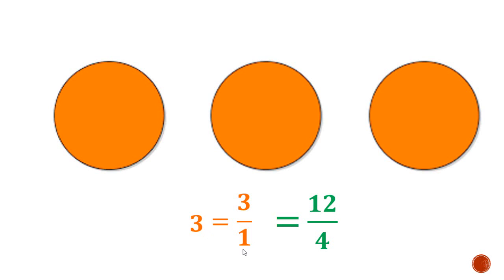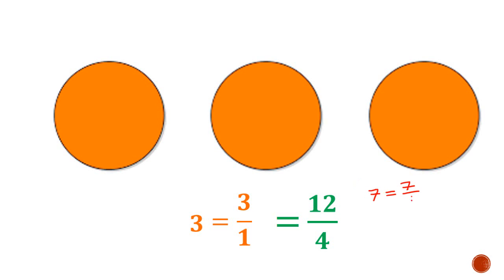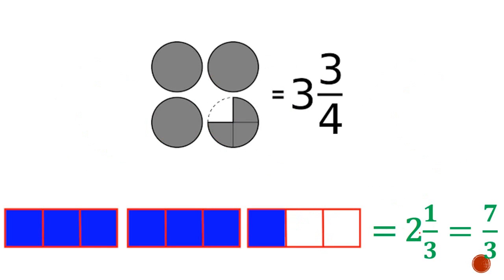To further illustrate: if each of the 3 circles was divided into 4 parts, the denominator would be 4. We'd have 4 in the first, 4 in the second, and 4 in the third — giving 12 parts in total. So 12 over 4 is the same as 3. The whole number 3 can be represented as 3 over 1 or as 12 over 4. Any whole number can be represented as a fraction by putting that number over 1 — so 7 is 7 over 1, and 10 is 10 over 1.